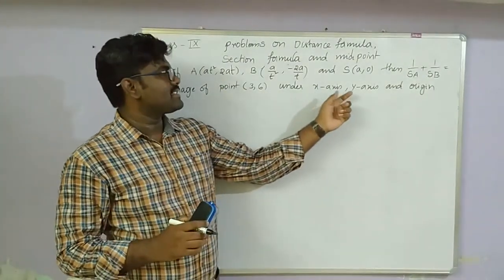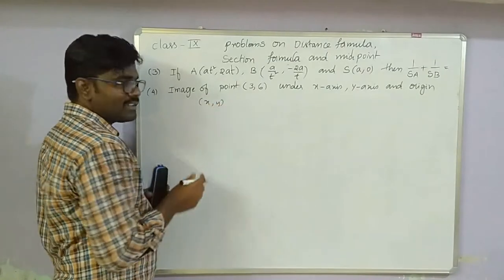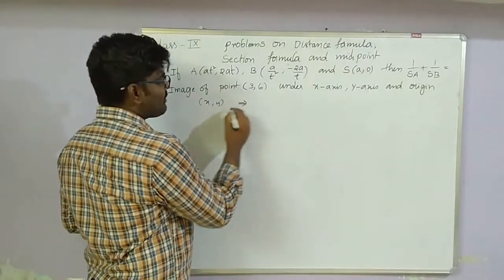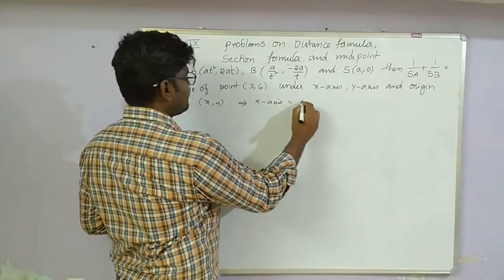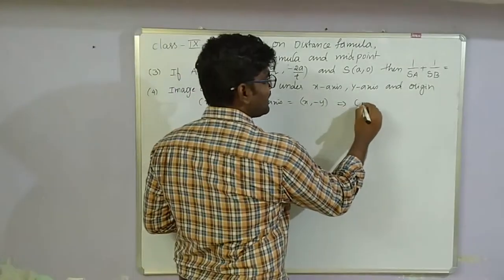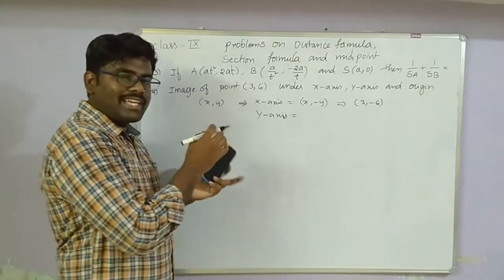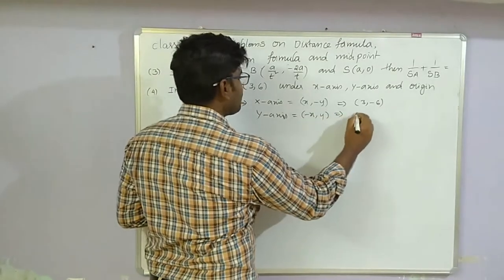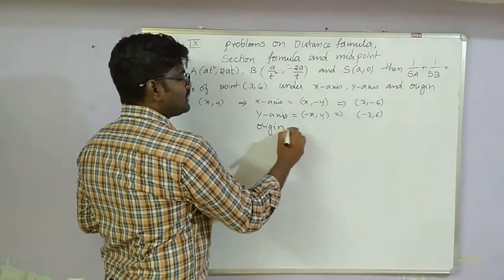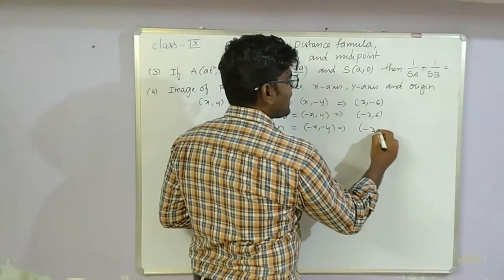Image of a point (3,6): Under the x-axis, we change the sign of the y-coordinate, giving (3, -6). Under the y-axis, we change the sign of the x-coordinate, giving (-3, 6). Under the origin, we change the signs of both coordinates, giving (-3, -6).